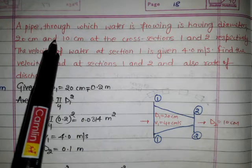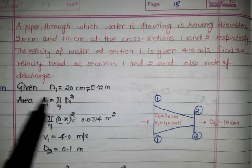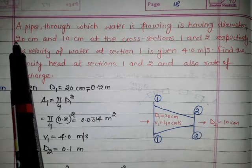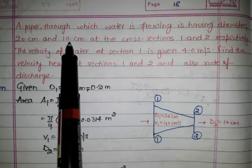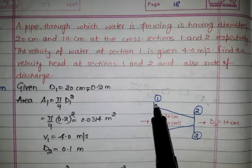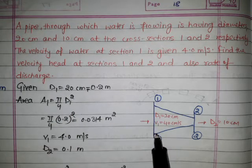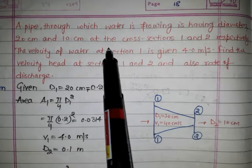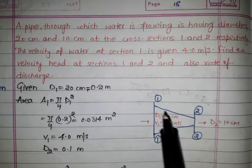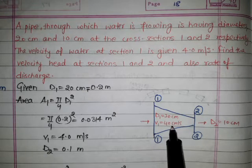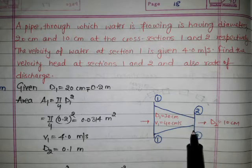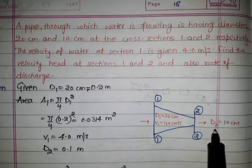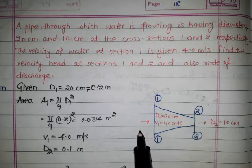Based on the given parameters, we plot a diagram because we have two diameters — one diameter is 20 centimeter and another is 10 centimeter. At section 1, the diameter is 20 centimeter; at section 2, it is 10 centimeter. The velocity at section 1 is given as 4 meter per second. We need to find the velocity head and the rate of discharge.